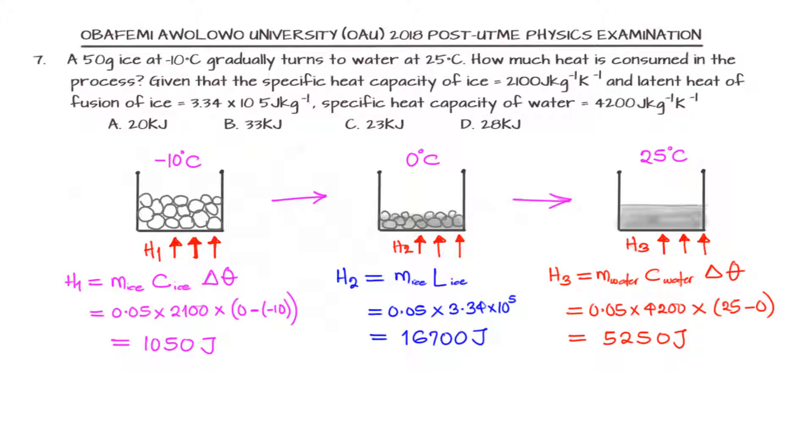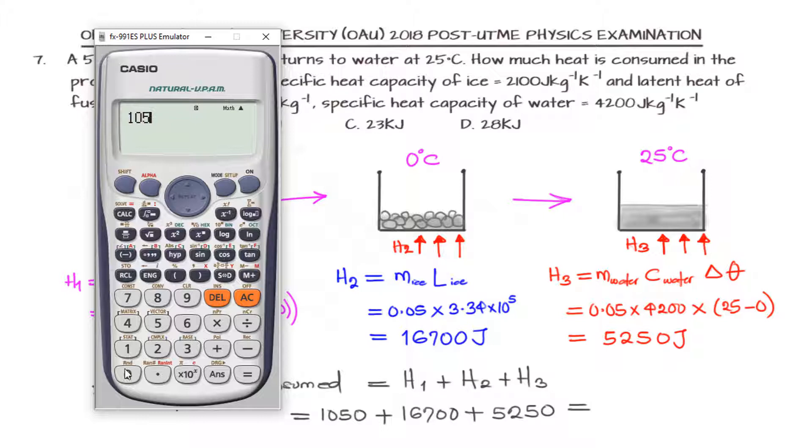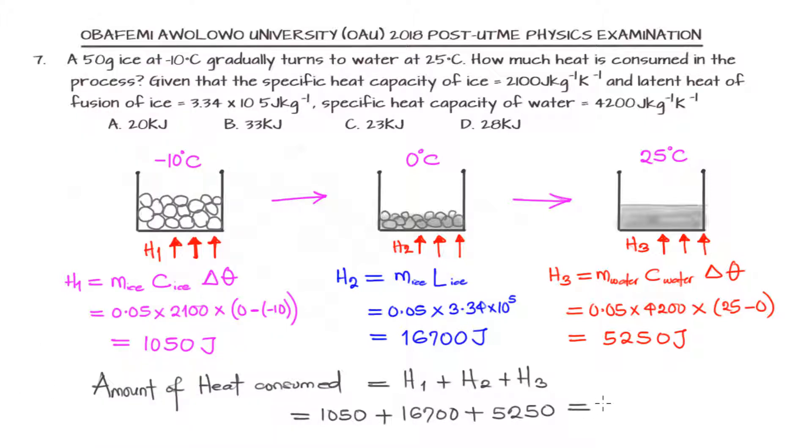We are asked to get the amount of heat that is consumed in the whole process. This will be the summation of the heat consumed per process. That would be 1,050 plus 16,700 plus 5,250, which equals 23,000 joules. 23,000 joules is the same as 23 kilojoules. The correct option is option C.